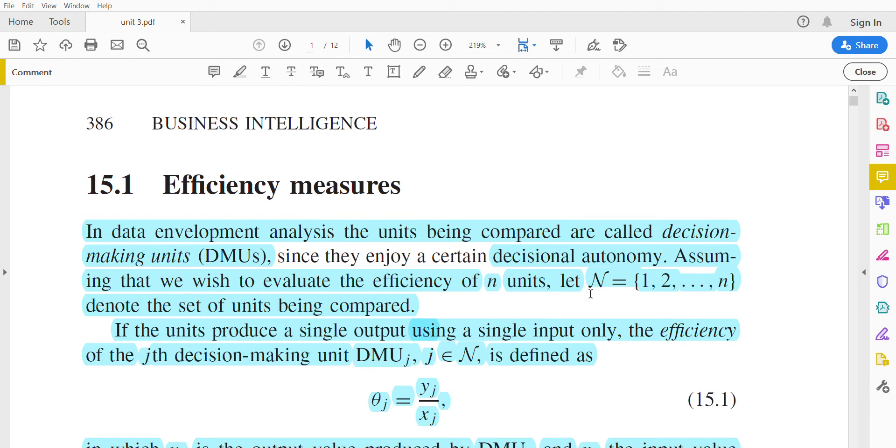These denote the set of units being compared. First, we are taking the case where units produce a single output using a single input only. Note the pinpoint here: single output using a single input. What is the efficiency the units produce for this?